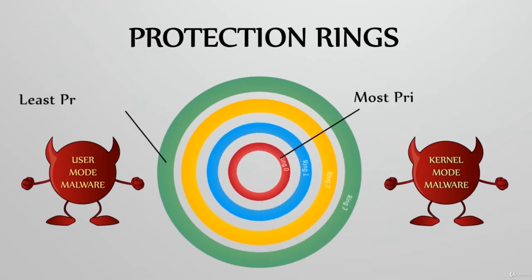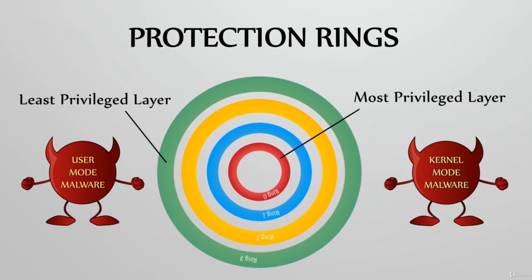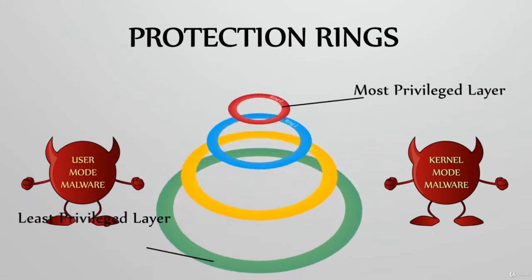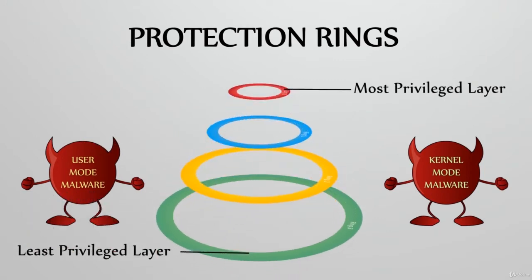Protection rings are organised in a hierarchical form, starting from ring 0, which is the most privileged layer, to ring 3, which is the least privileged layer. The intermediary rings 1 and ring 2 are comprised of the drivers that facilitate communication between ring 0 and ring 3.